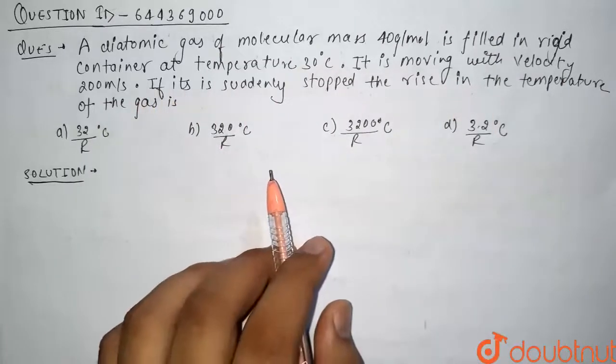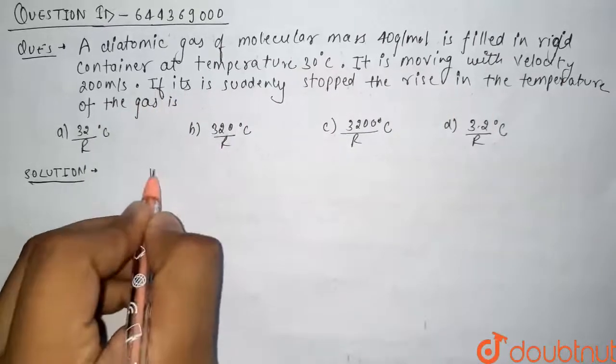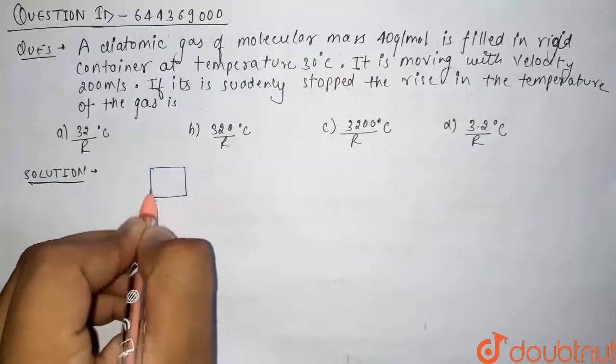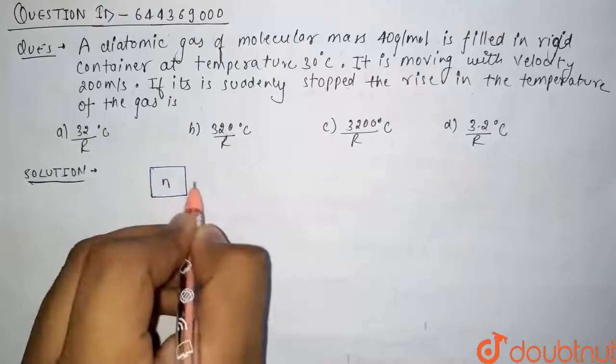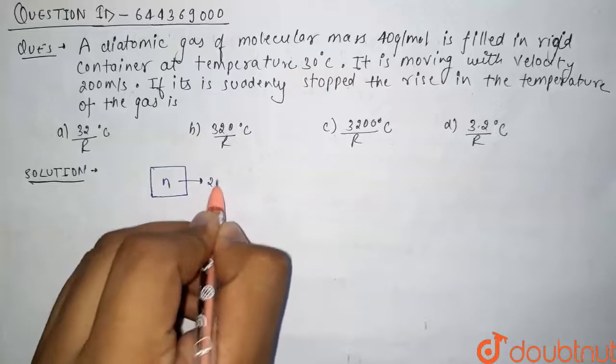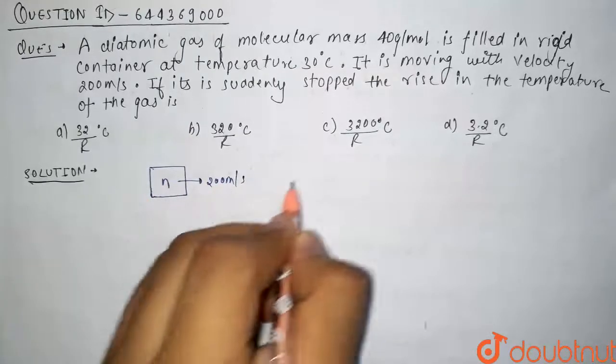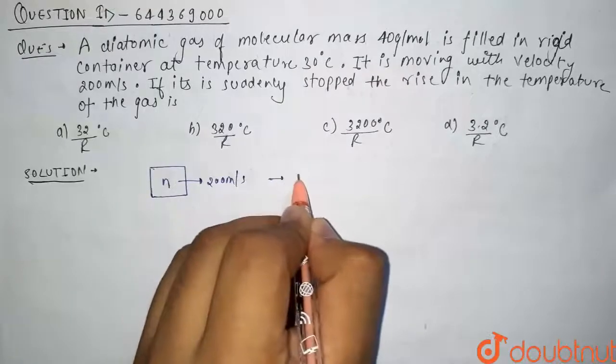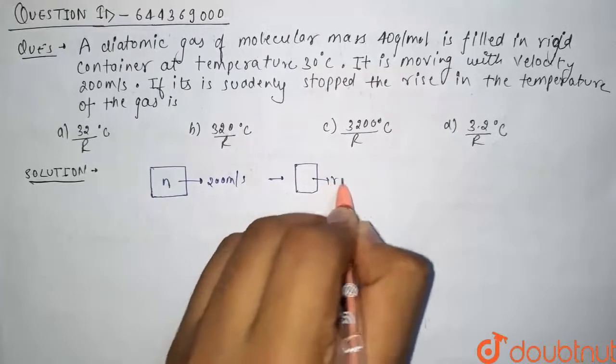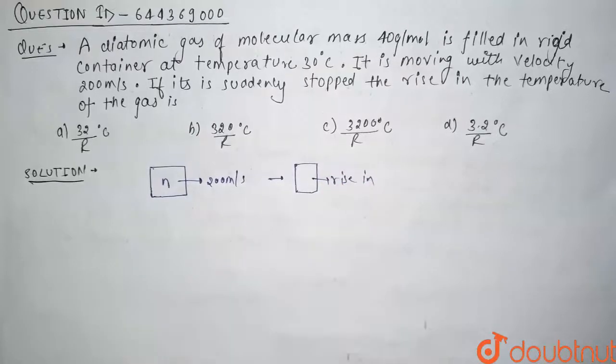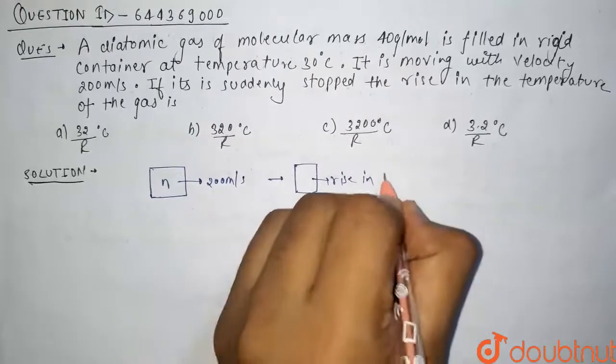In this question, we have been given a container in which n moles of gas are there, and it is moving with a speed of 200 meters per second. Now if it is suddenly stopped, then we have to find what is the rise in temperature.